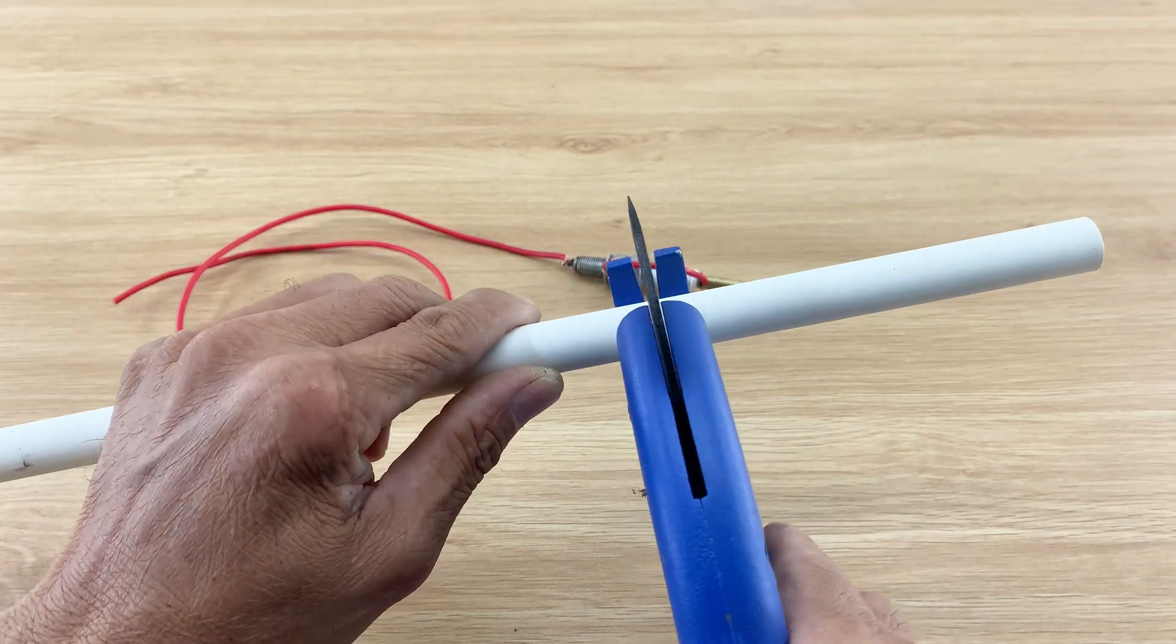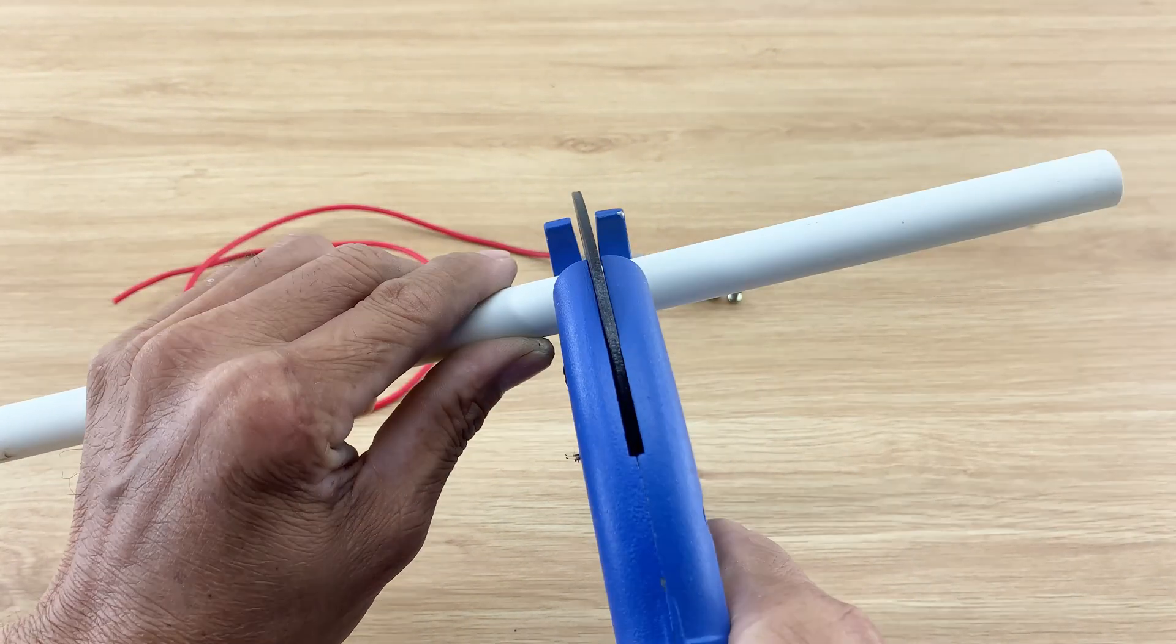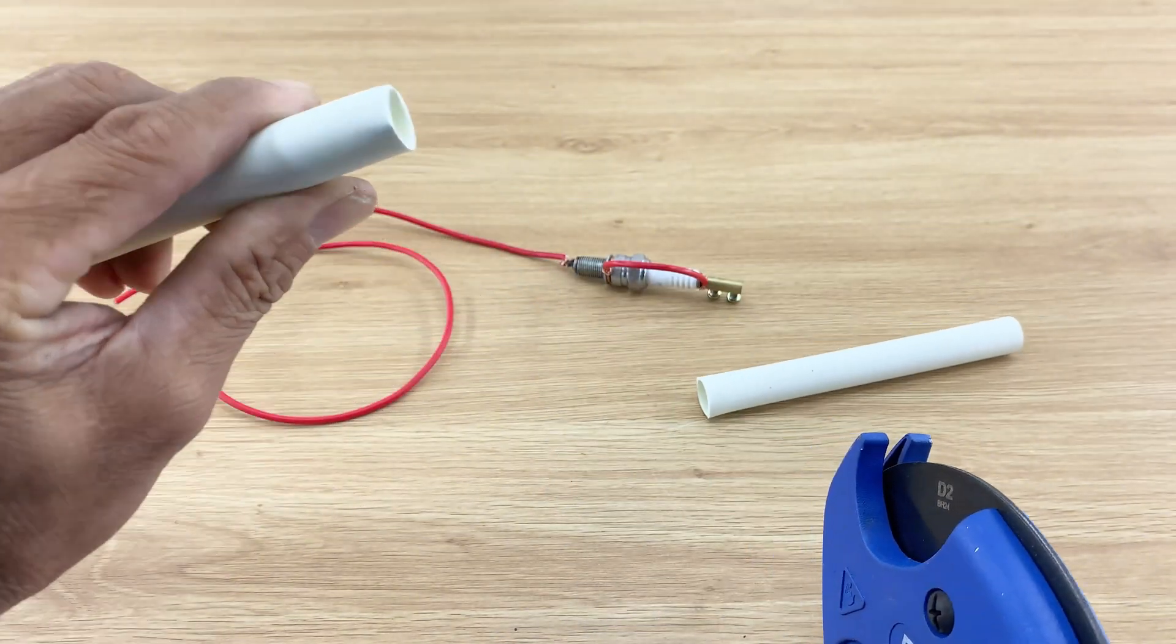I'll create an insulated grip. I'm cutting a short section of PVC pipe. This pipe will serve as the handle for our new tool.